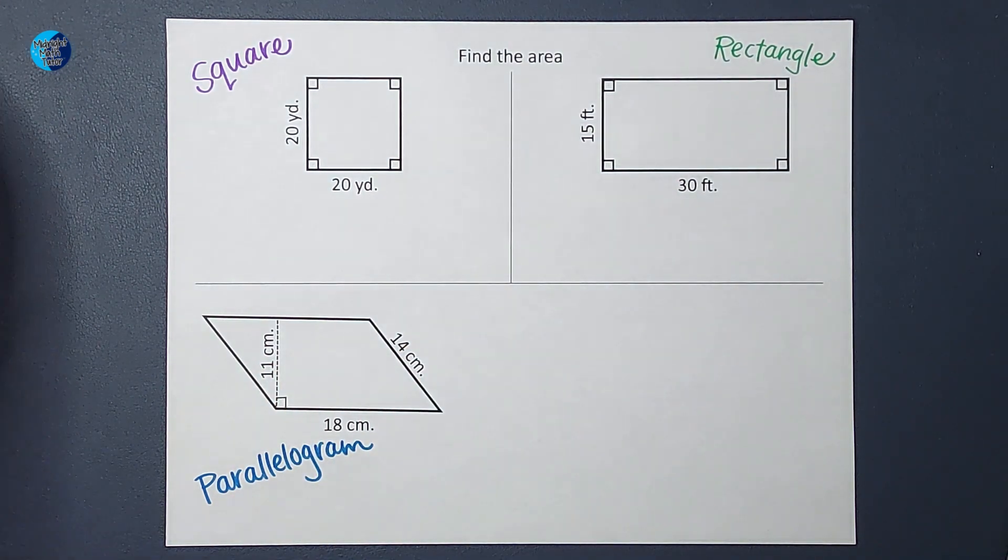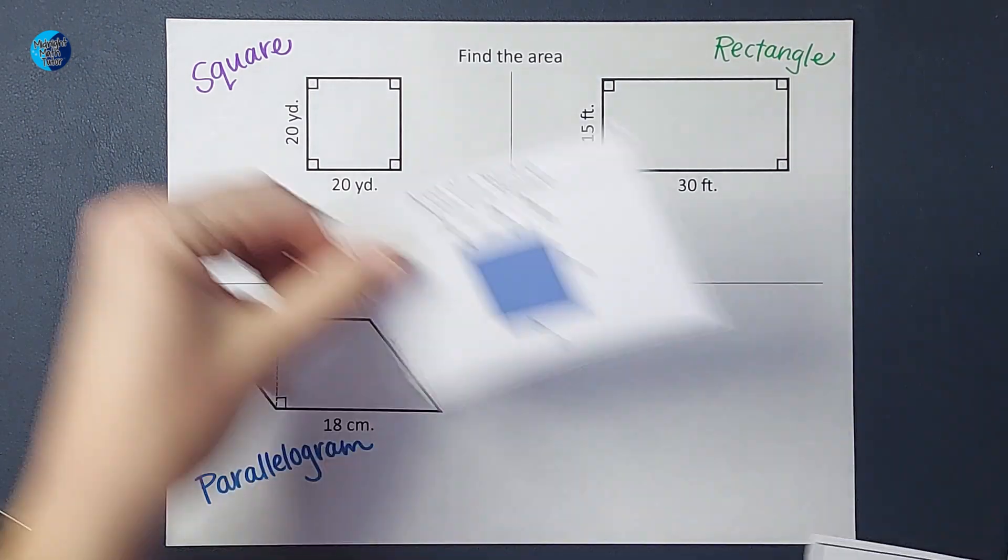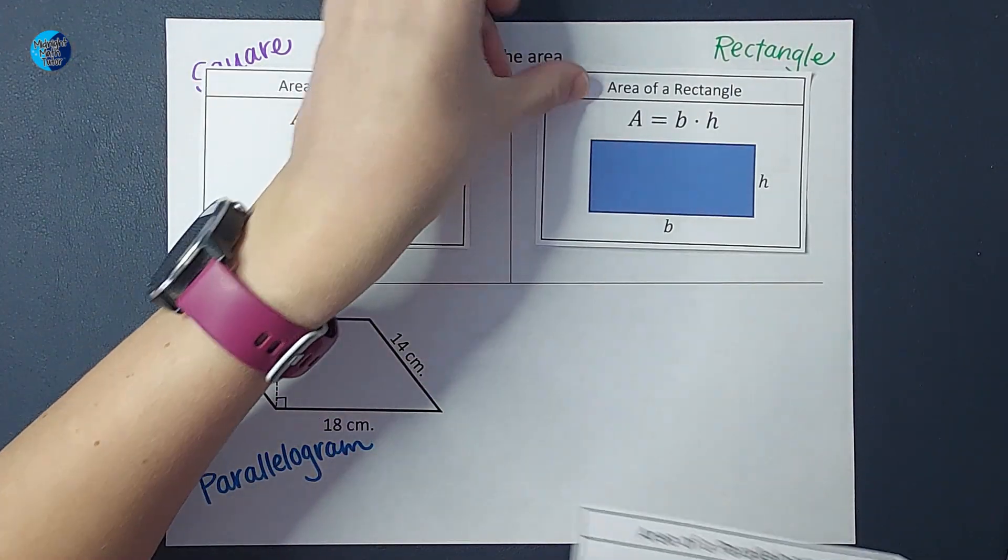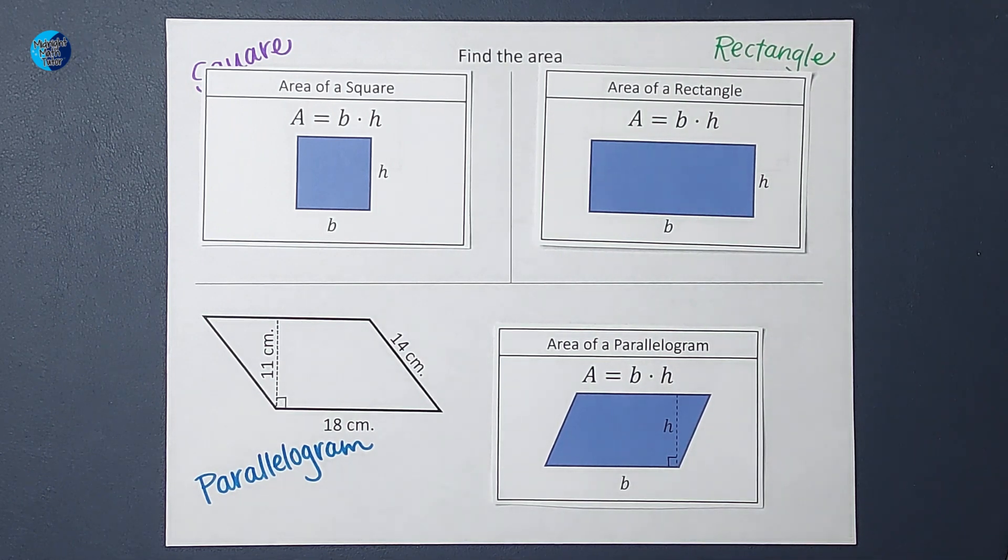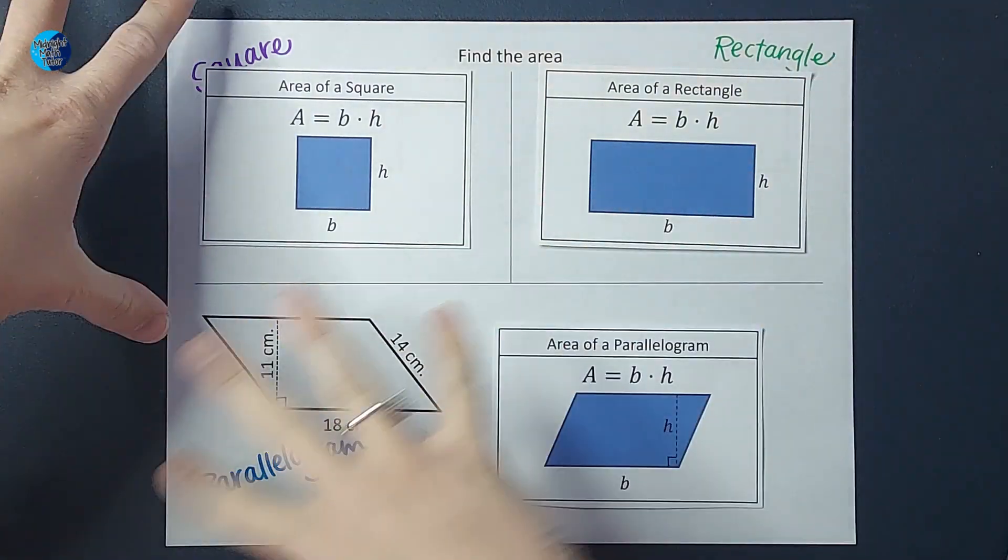Now we want to find the area for each of these, but the funny thing is, the area for each of them—I made a separate paper for each one but for all of them, area is base times height. Pretty easy to remember, right?